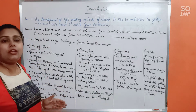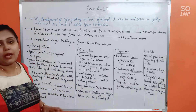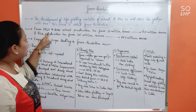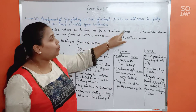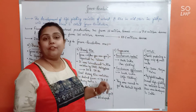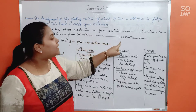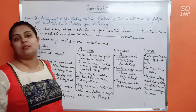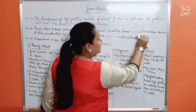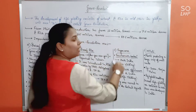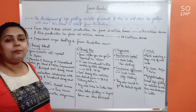During the Green Revolution, the increase in rice and wheat production was remarkable. From 1960 to 2000, wheat production increased from 11 million tons to 75 million tons. For rice, production increased from 35 million tons to 89.5 million tons — almost 90 million tons. Such a huge difference was brought to India.